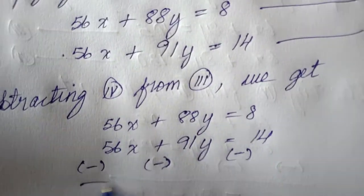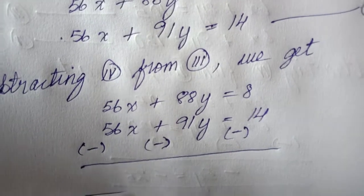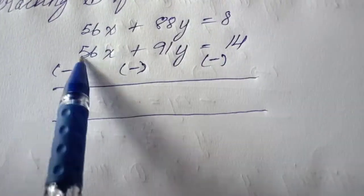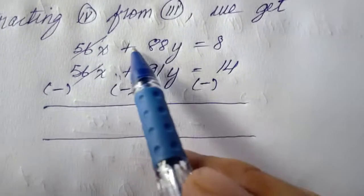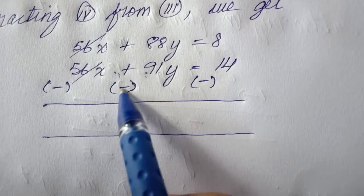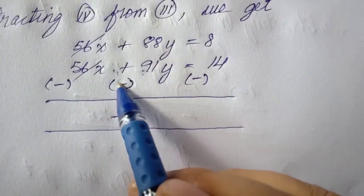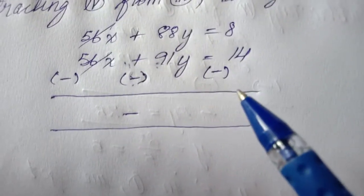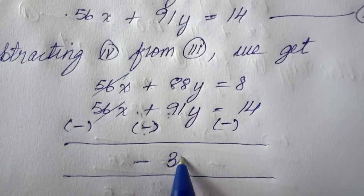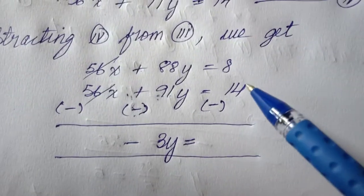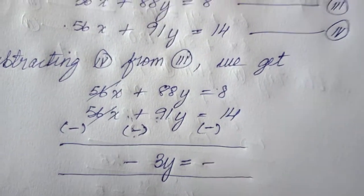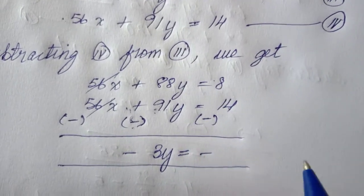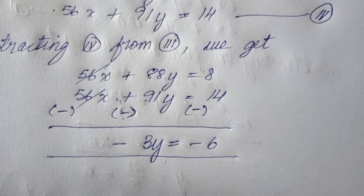Now, 56x minus 56x cancels out to zero. Next, 88y minus 91y: since we're subtracting, the sign becomes minus, so 91 minus 88 gives 3y. From the constant terms, we have minus 14 and plus 8, so the result is minus 6. Therefore we have negative 3y equal to negative 6.